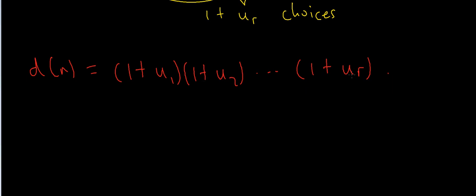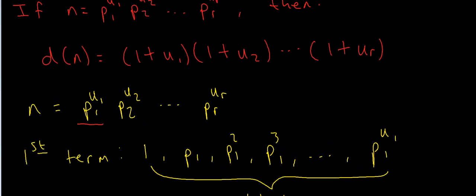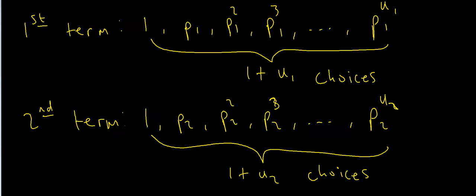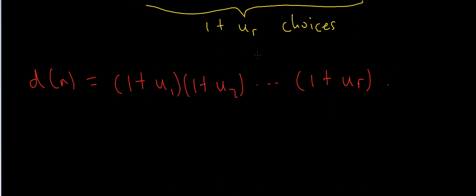The technique used in this proof — taking n and putting it into a prime factorisation — will be used time and time again throughout proofs in analytic number theory and the distribution of primes in this series. I hope you enjoyed this video. In the next video I'll prove that the divisor function is actually a multiplicative function. If you like this video please leave a like, comment and subscribe.